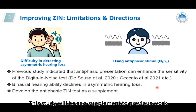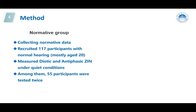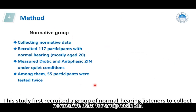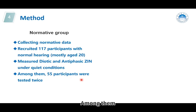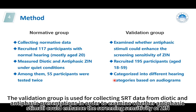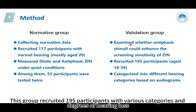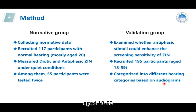Utilizing this characteristic, we developed the antithelastic scene and evaluated its hearing screening capabilities. This study first recruited a group of normal hearing listeners to collect normative data for antithelastic scene. This group consists of 170 participants with normal hearing, among them 55 participants were tested twice. Then a validation study was conducted. The validation group collected SRT data from diverted and antithelastic presentations, in order to examine whether antithelastic stimuli could enhance the screening sensitivity of the scene. This group recruited 195 participants with various categories and degrees of hearing loss, aged 18 to 59.